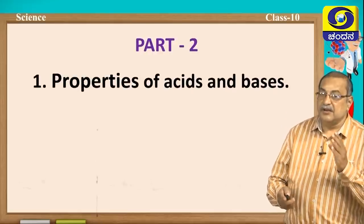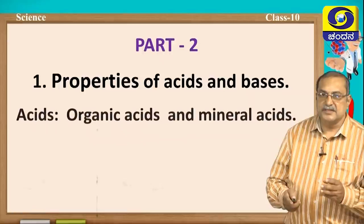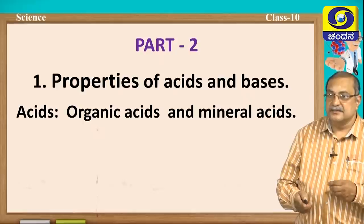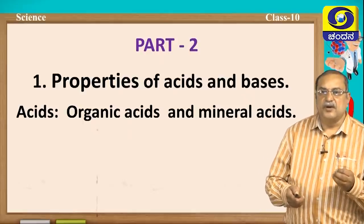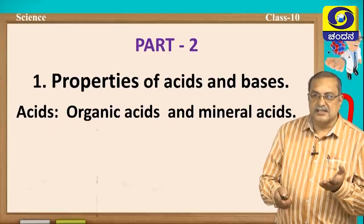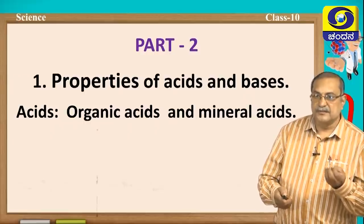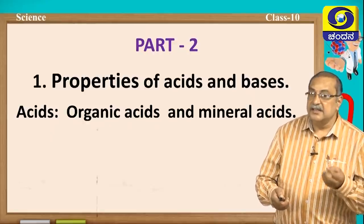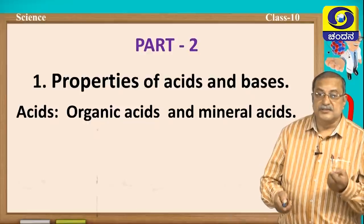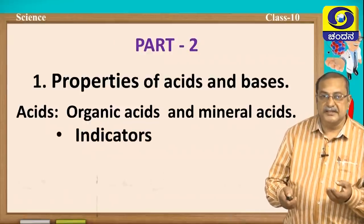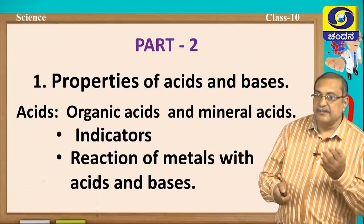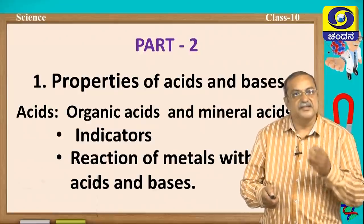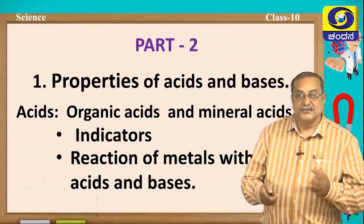This is just a recapitulation of what we have studied. In Part 2, we learnt about properties of acids and bases, organic acids and mineral acids. Organic acids are natural acids available in fruits, ants, and some animals. Mineral acids are hydrochloric acid, sulfuric acid, etc. We also learnt how to identify them using indicators, the reaction of metals with acids and bases, and how to identify hydrogen gas and carbon dioxide gas released in these reactions.